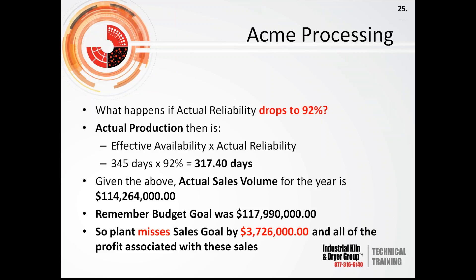What happens if actual reliability drops to 92% — if Mr. Coyote is spending too much time chasing roadrunners? Actual production is 345 days × 92% = 317.40 days, giving an actual sales volume of $114,264,000. The budget goal was $117,990,000, so the plant misses that sales goal by $3,726,000 — along with all of the profit associated with those sales.